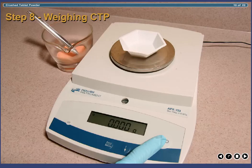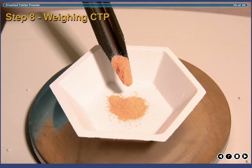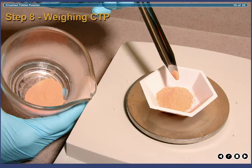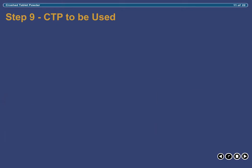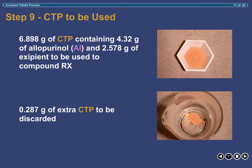Next, we simply weigh the 6.898g of crushed tablet powder as illustrated here. Finally, what we have is 6.898g of crushed tablet powder containing 4.32g of allopurinol that will now be used to compound the prescription.